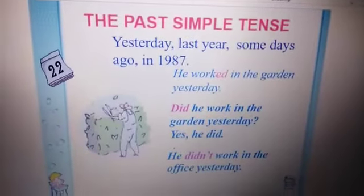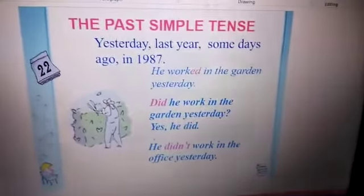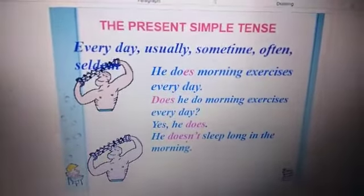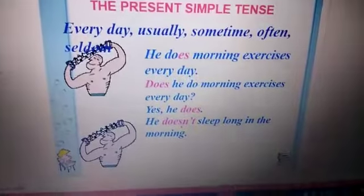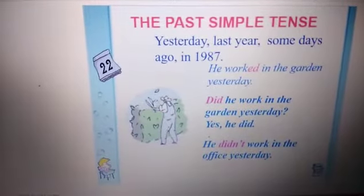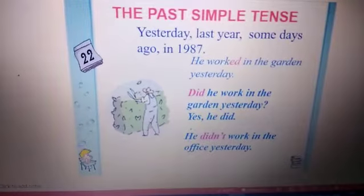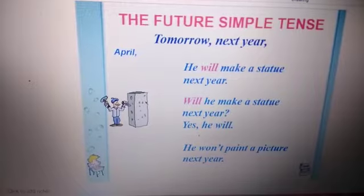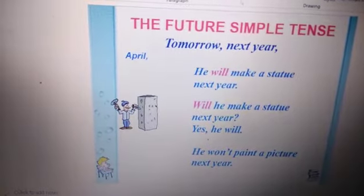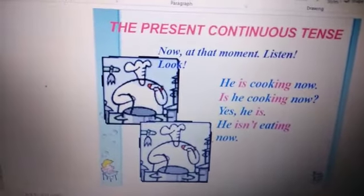Good morning dear students. In your English class yesterday, we did the present simple tense, which denotes a habitual action. Then we also did the past simple tense, which talks about an action in the past. Then we took up the future simple tense, which talks about an action which is going to take place — that is, tomorrow or next year. Now today in your English class we are going to take up the next phase of tenses.